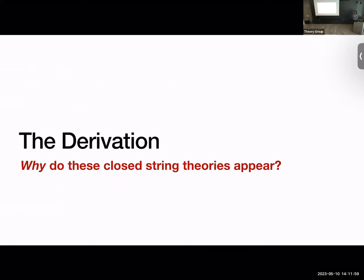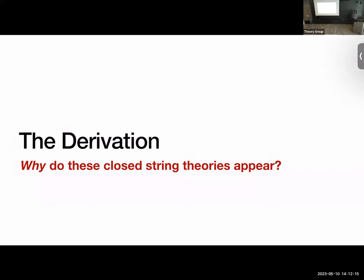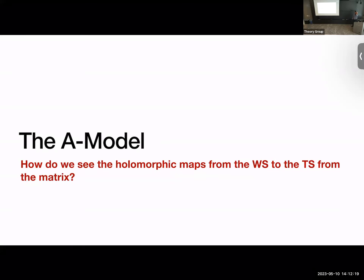In the last 20 minutes, I have about three slides for the A-model and three for the B-model, explaining why these are the types of closed strings you land on from the structure of the matrix theory correlators. For the A-model: the A-string theory considers holomorphic maps from the worldsheet to the target space. We want to see how those are hiding in the matrix.